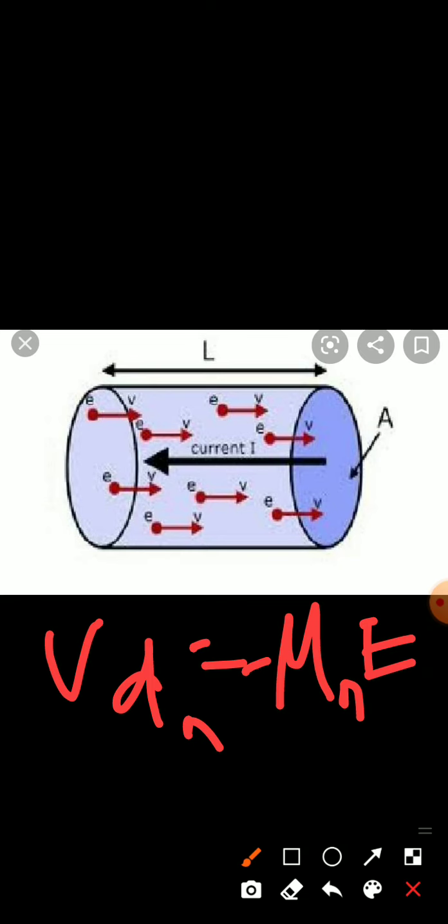Assuming an electric field applied to the semiconductor, the field produces a force that acts on free electrons and holes, causing a net drift velocity and net movement. In a semiconductor with a large number of free electrons, an electric field applied in one direction produces a force on electrons in the opposite direction, since electrons are negatively charged. This gives the drift velocity formula: Vd_n = -μn·E, where μn is the electron mobility constant with units of cm² per volt-second.